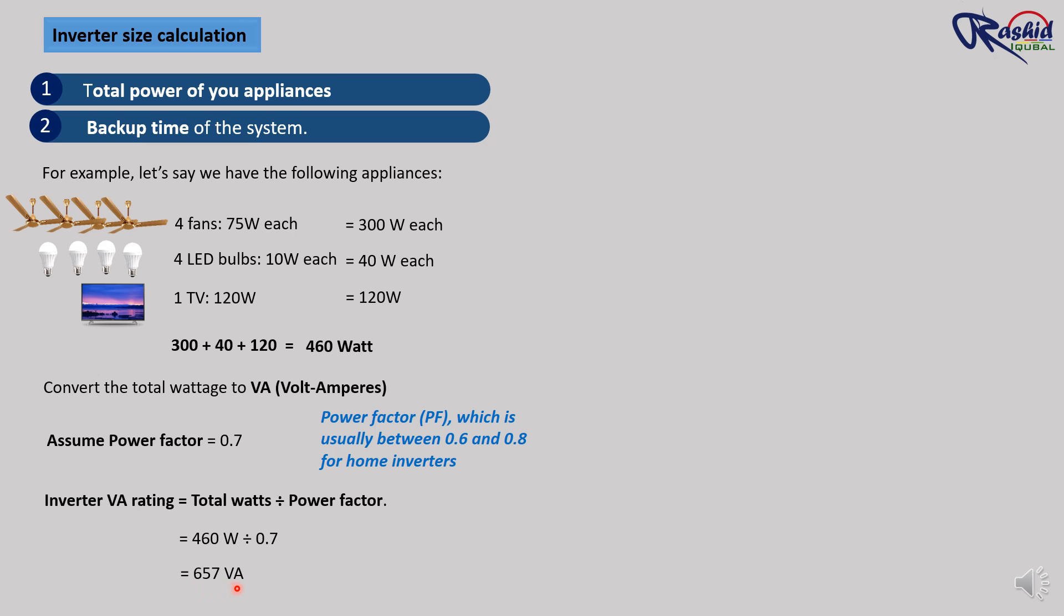Since inverters come in standard sizes, we will round this up to the next available size, which is typically 700 VA. This is the standard size which is available in the market. So we will choose a 700 VA size inverter.